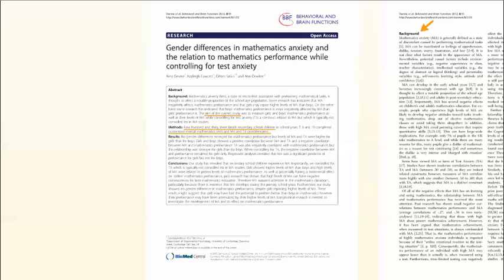Most of the time, you can identify a primary article by looking at the abstract. The abstract of a primary article will describe the research study that was done, or it will indicate that the author is relating his own experiences or ideas. If you can't tell what an article is by looking at the abstract, you may need to look at the full article.